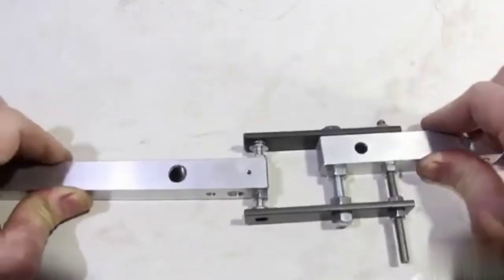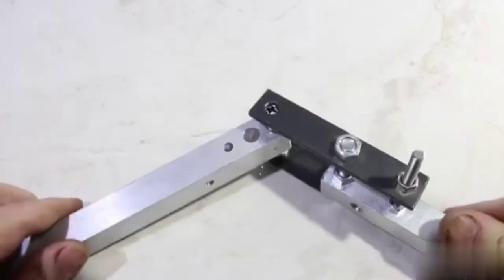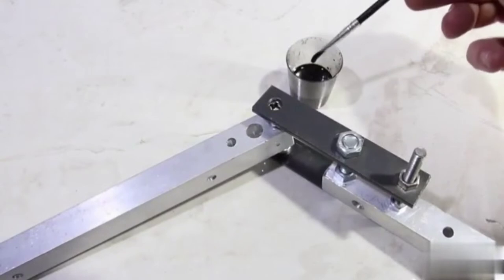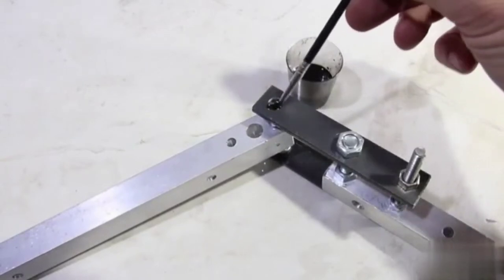The contact area of the round screw heads with the countersunk holes is very small, which causes noticeable wear during the first movements, so the joint may need to be readjusted after the first operation.